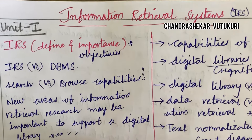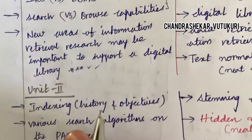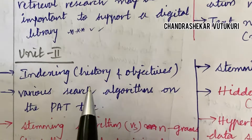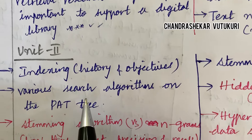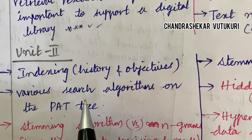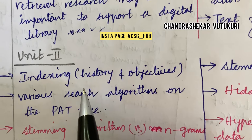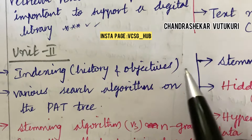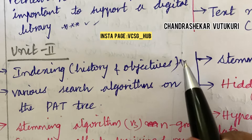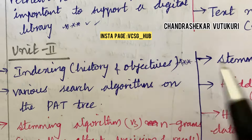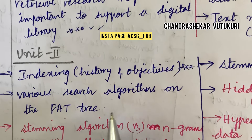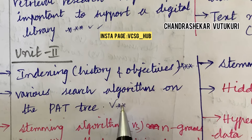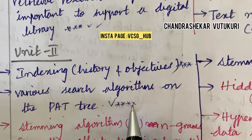Text normalization process along with a neat sketch is also said to be a topmost question from Unit 1. Moving into Unit 2 — as the subject is theory-based, write your answers point-wise and not in paragraph form. Defining the term indexing along with its history and objectives is said to be a short question. Various search algorithms on the pad tree is a topmost question.